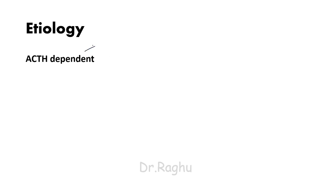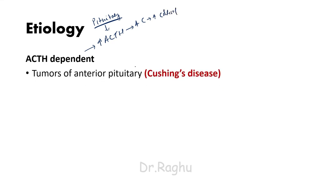ACTH-dependent means there is an increase in the secretion of ACTH, which comes from the pituitary gland. Some abnormality in the pituitary gland causes increased production of ACTH, which in turn stimulates the adrenal cortex, increasing production of cortisol. This can be due to tumors of the anterior pituitary gland. If Cushing's syndrome occurs because of anterior pituitary tumors, it is specifically called Cushing's disease.